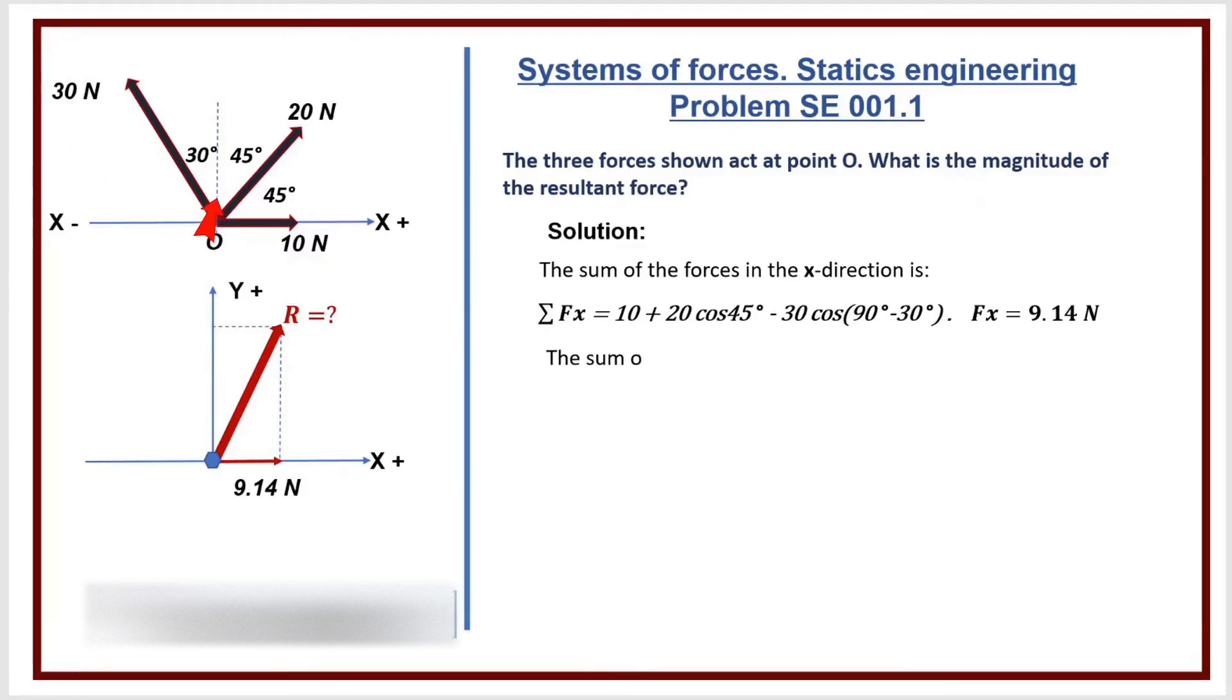The sum of the forces in the y-direction is: sum of Fy equals 0 plus 20 times cosine 45 degrees plus 30 times cosine 30 degrees. Fy equals 40.12 Newtons.